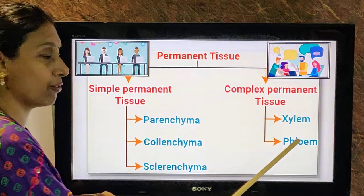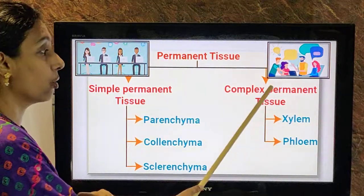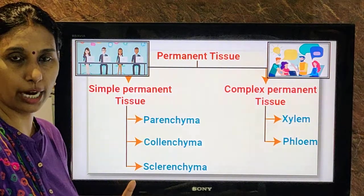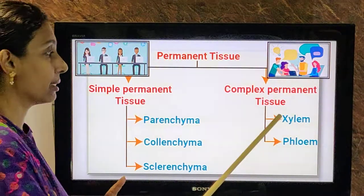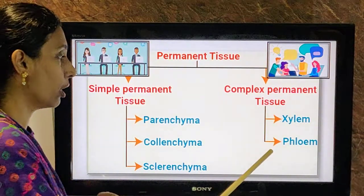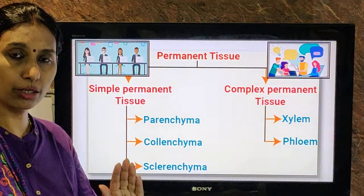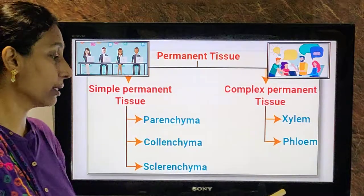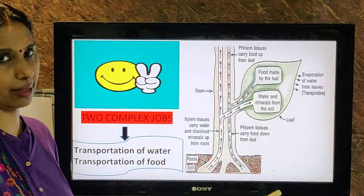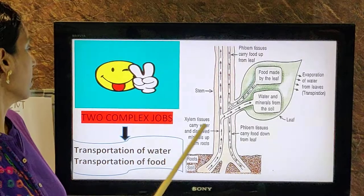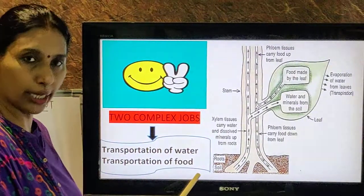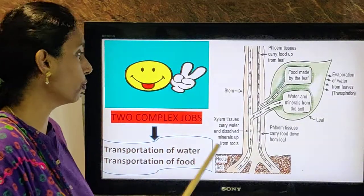The complex permanent tissues are xylem and phloem. There are only two complicated jobs in plants: transportation of water and transportation of food. Xylem is made up of four elements and phloem is made up of four elements. Together, this group helps in the functioning of these complex functions in plants. The two complex jobs are transportation of water and transportation of food.